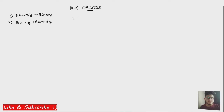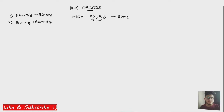The instruction format will help us in understanding how we can do these conversions, and we will take some examples. Let me write a simple instruction here, which is a move instruction. Let's say this is a move AX comma BX instruction. We already know that the contents of the BX register will go into the AX register. Now we want to convert it into a binary form, and for that we will have to take the help of the instruction format.